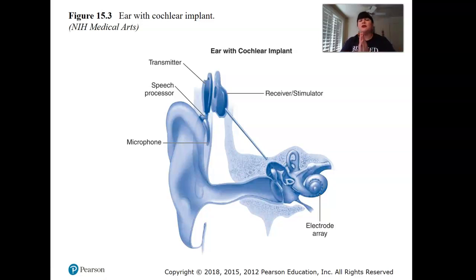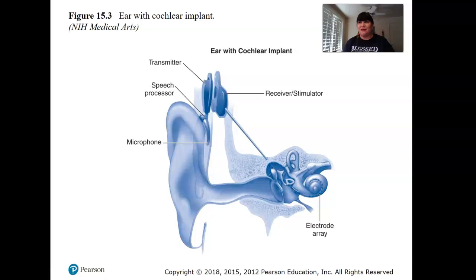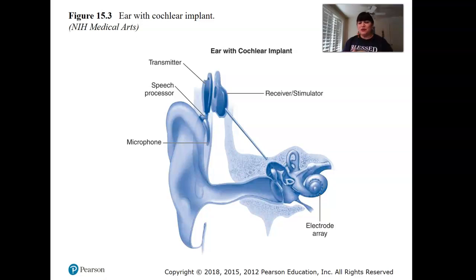If a child can't hear, they have a hard time producing sound because they can't hear what it should sound like. Cochlear implants have really helped people, because hearing and speaking are key ways of communication. You can imagine how frustrating it would be for a child who can't hear, can't speak, and can't communicate. The cochlear implant has really helped with rudimentary hearing, speech, and communication.